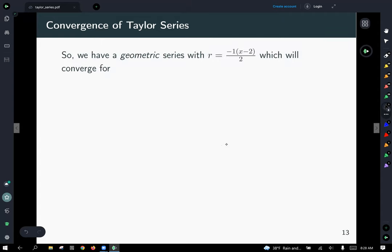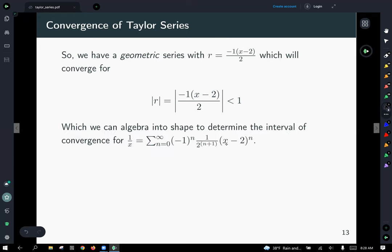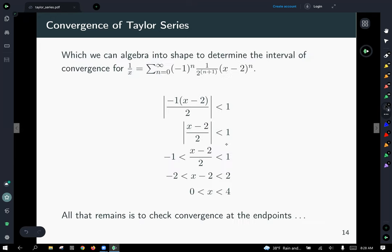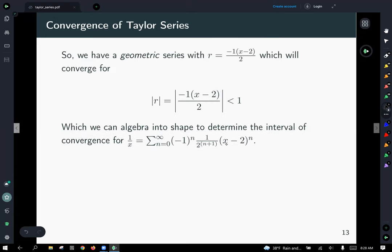So continuing along that logic, what do we know about geometric series? We know that they converge when the absolute value of r is less than 1. So this now becomes a relatively straightforward algebra task, which we can then algebra into shape to determine the interval of convergence for our series.